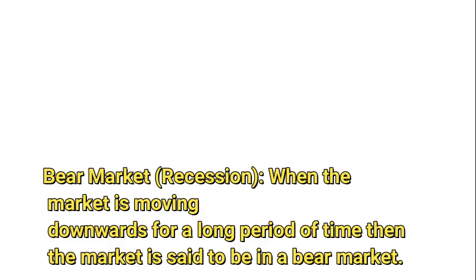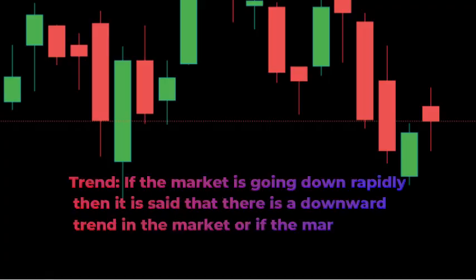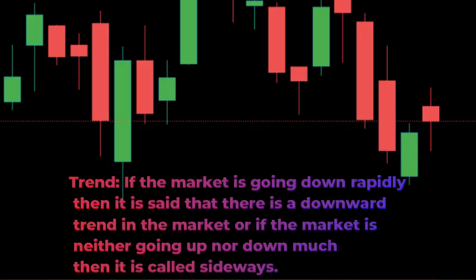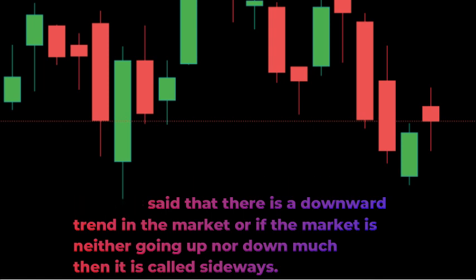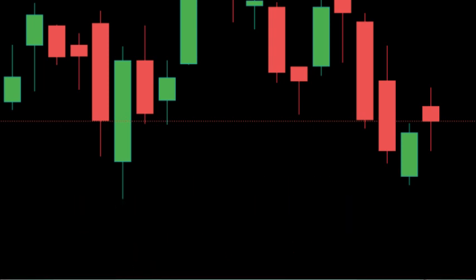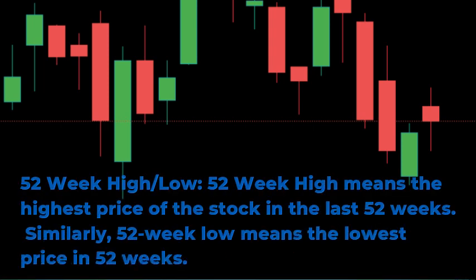Trend: if the market is going down rapidly, then it is said that there is a downward trend in the market. If the market is neither going up nor down much, then it is called sideways. 52-week high/low: 52-week high means the highest price of the stock in the last 52 weeks.